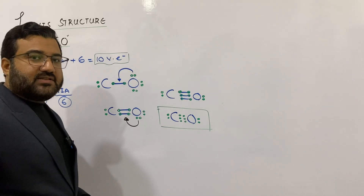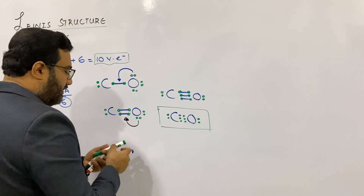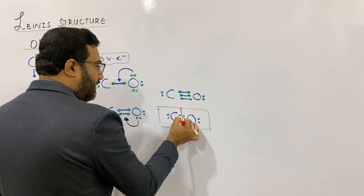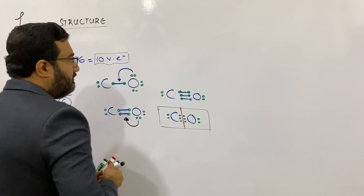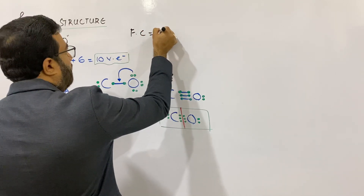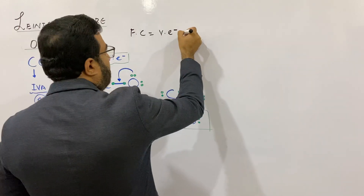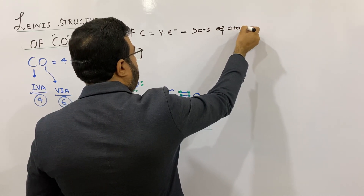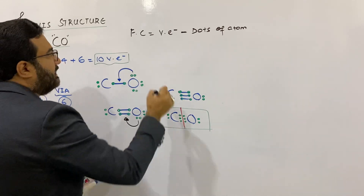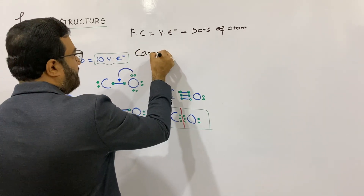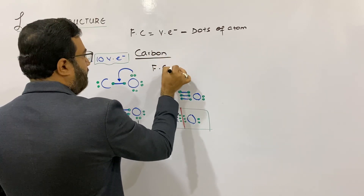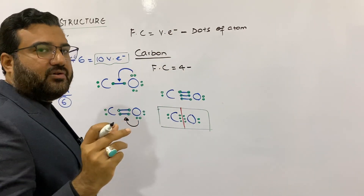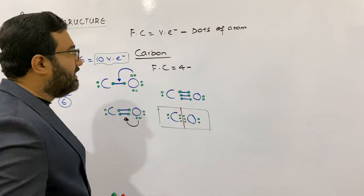Can you calculate the formal charge of oxygen and carbon in this case? Let us calculate the formal charge. In order to calculate the formal charge, the bonded electrons are equally distributed between the two bonded atoms. The formal charge is equal to the valence electrons of an atom minus the electrons assigned to that atom in its Lewis structure — meaning how many electrons are given to that atom. The valence electrons of carbon in its ground state atomic form are four.